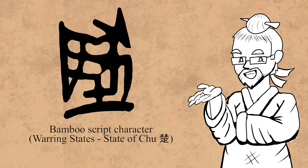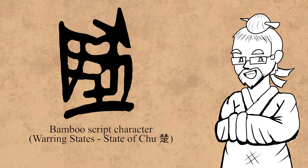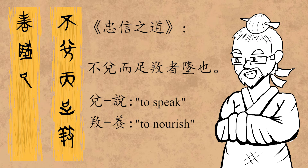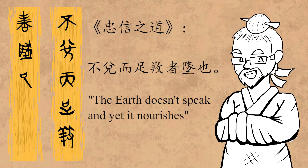We see the occasional use of the 籀文 version of 地 during the Warring States period, notably in the Tao of Loyalty: 不言而族仰族，地也 — the earth doesn't speak, and yet it nourishes. In the larger context of the text, this is a metaphor illustrating how actions speak louder than words: because the earth is silent, i.e., doesn't offer empty promises, but it still provides.